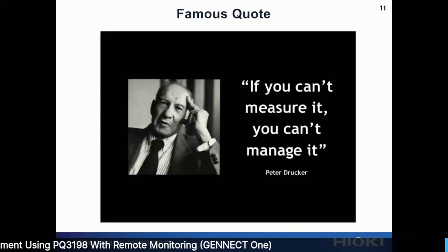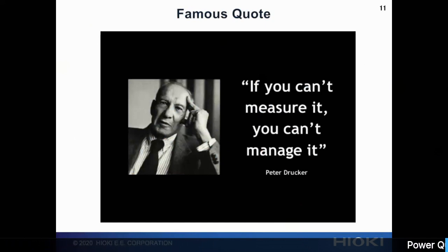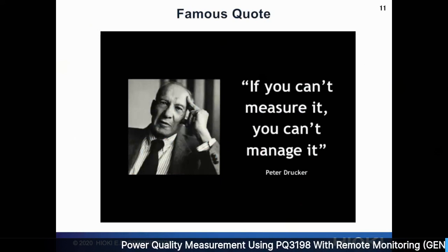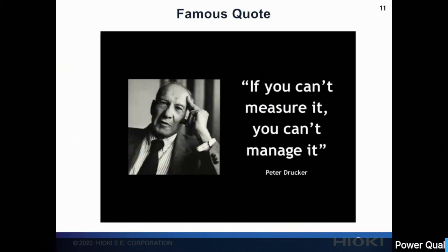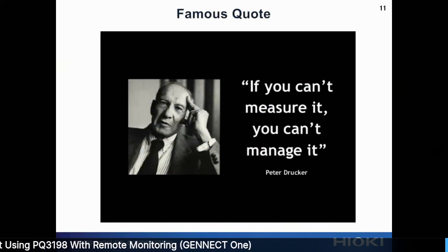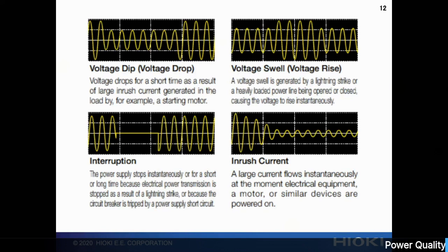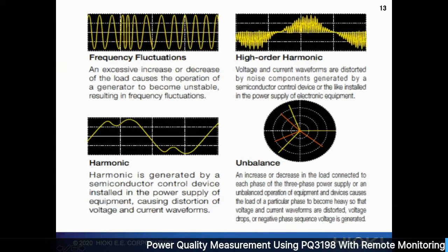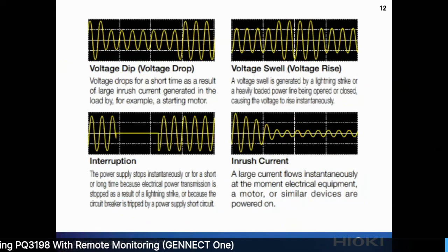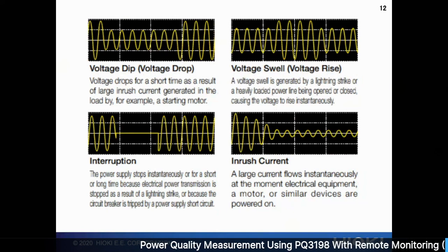I'd like to quote Peter Drucker: 'If you can't measure it, you can't manage it.' This is very true — if you cannot see what is the cause of the problem, there's no way you can manage it. You need to use a PQA to do measurements first and identify the cause before you can come up with a solution. There are various types of anomalies that can cause power interruption: voltage dip, swell, inrush current, transient, frequency fluctuations, harmonics, unbalanced, and high-order harmonics. The only way to find out which is the problem is by using a PQA.